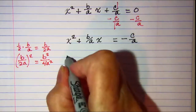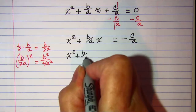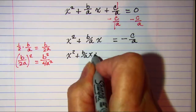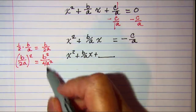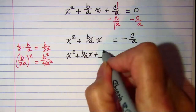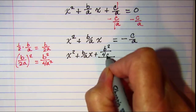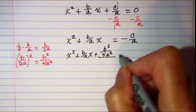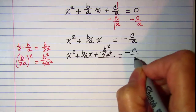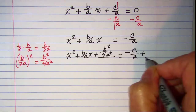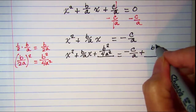So I have x squared plus b over a times x plus b squared over 4a squared added to the left side, and negative c over a plus b squared over 4a squared added to the right side.